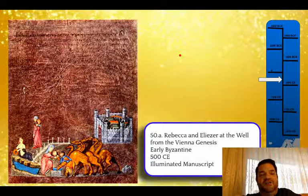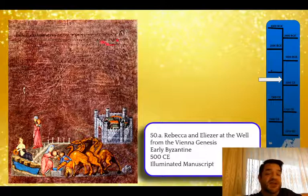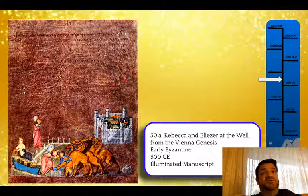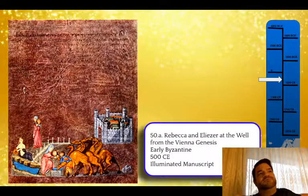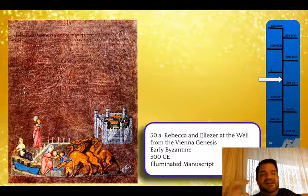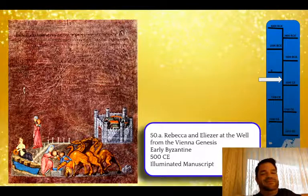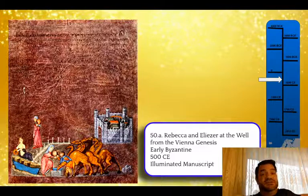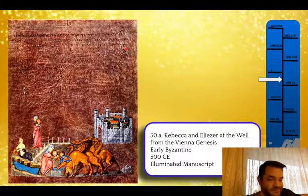The Vienna Genesis comes from a royal workshop — we know that because the pages are dyed purple. Purple was an imperial color because it was so expensive. Called Tyrian purple, it was made from a sea snail from the Eastern Mediterranean: you'd take the animal from the shell, crush and boil thousands of them to make even the smallest amount of dye. It really was an expensive color, which is why purple became the imperial and royal color in the West.